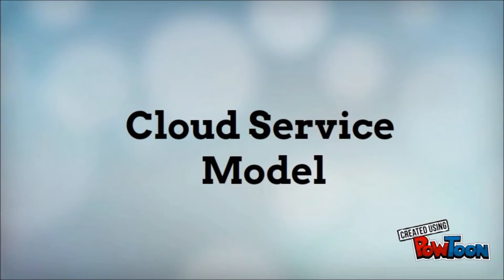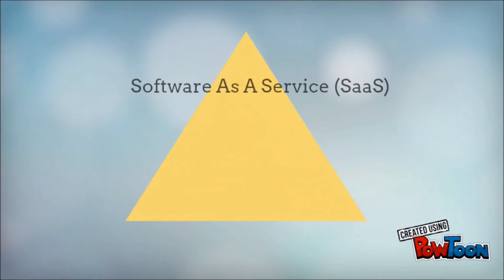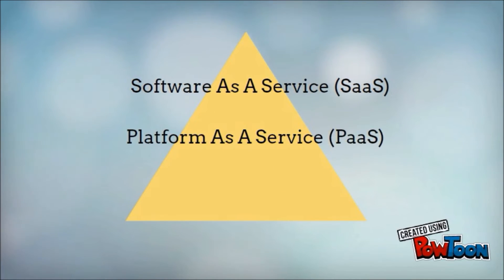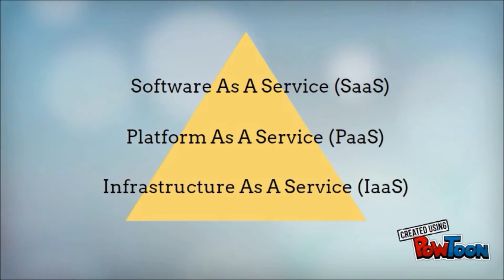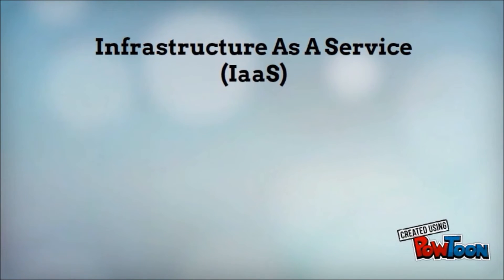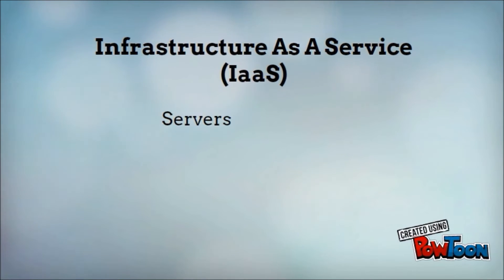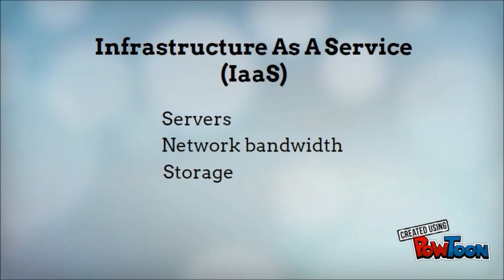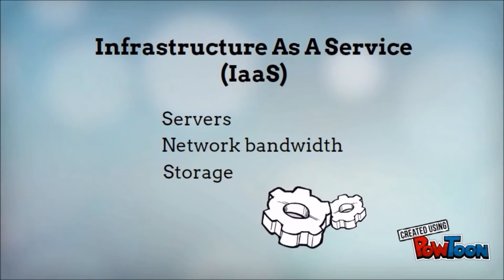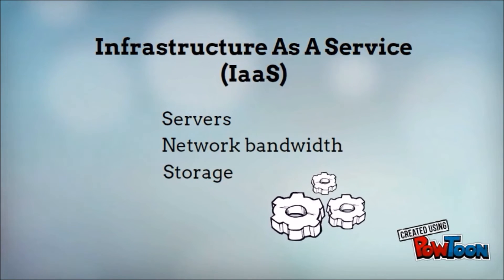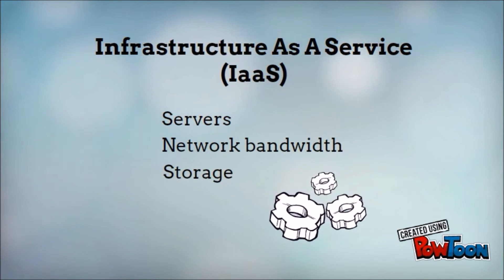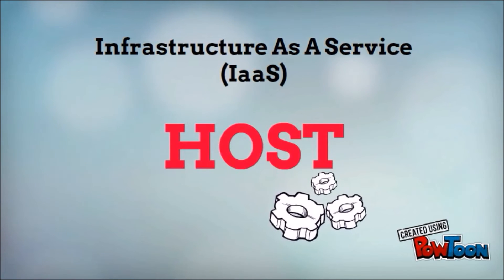Let's talk about the cloud service model, which consists of three layers: Software as a Service, Platform as a Service, and Infrastructure as a Service. IaaS provides resources such as servers — often in the form of virtual machines — network bandwidth, storage, and related tools necessary to build an application environment from scratch. In short, IaaS is about hosting.